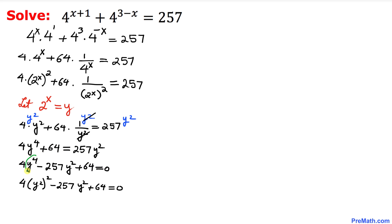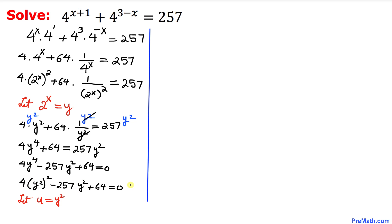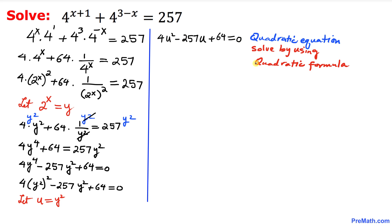We write y⁴ as (y²)². Now let's make another substitution: let u = y². Wherever we see y² we replace it by u. Our equation becomes simply 4u² − 257u + 64 = 0.